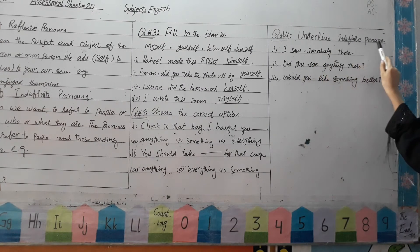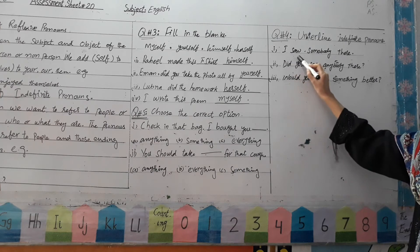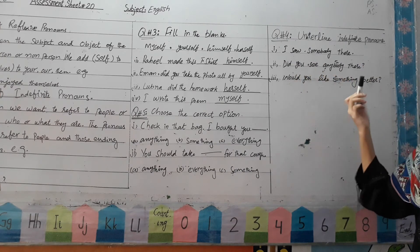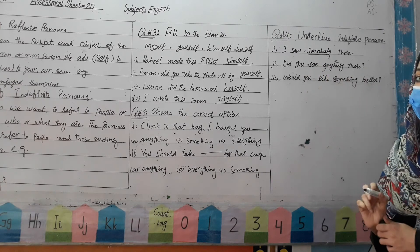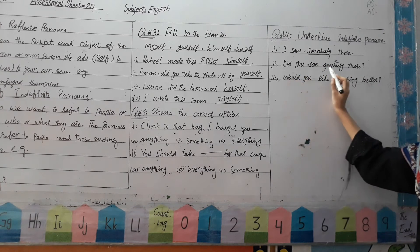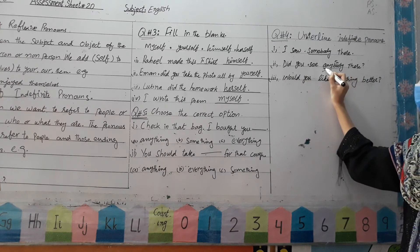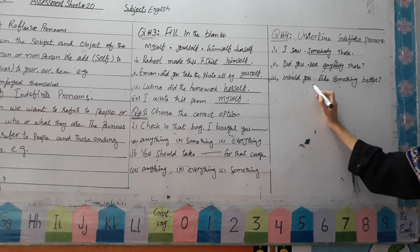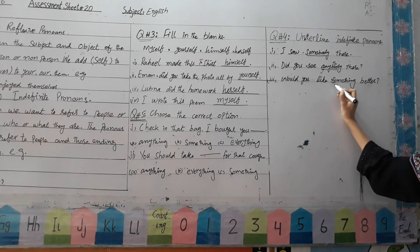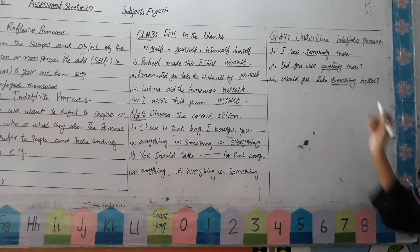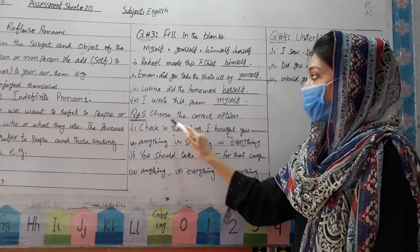Now come to question number 4: underline the indefinite pronouns. Sentences are given. First: I saw somebody there — underline 'somebody'. Second: Did you see anybody there? — underline 'anybody'. Third: Would you like something better? — underline 'something'. These three words are your indefinite pronouns.